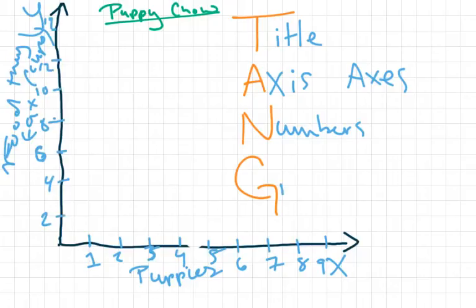Finally, the G stands for graph your points. So when you say, hey, I have three puppies, and altogether the three puppies eat 10 cups of food, you want to make sure to graph it appropriately on your graph. And there's a quick refresher of graphing on the coordinate plane in the first quadrant.